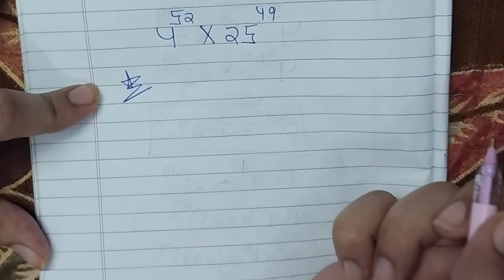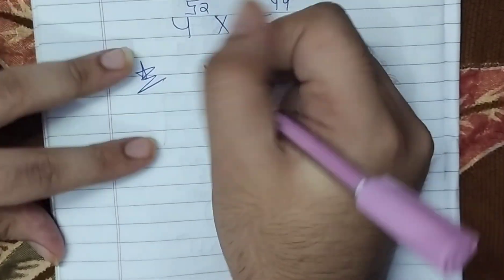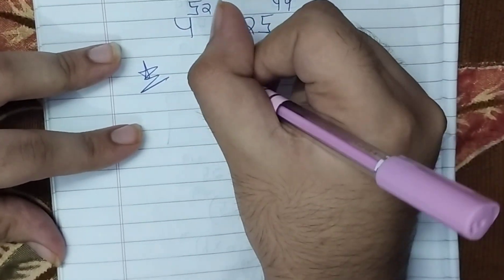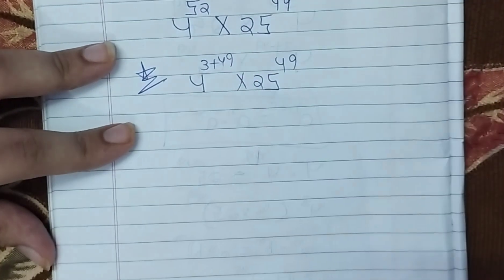We need to write it in the standard form. What do we do? 4 to 52, we need to split this. What do we do? 4 to 49 multiplied by 25 to 49.